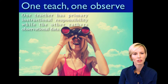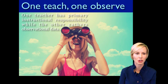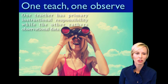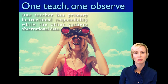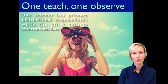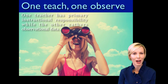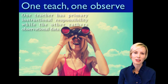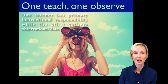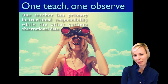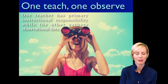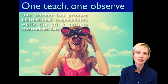In the second model of co-teaching — one-teach, one-observe — one teacher takes the primary responsibility for instruction while the second teacher is observing. The second teacher could be observing a variety of things: observing students and taking data on their performance, observing a particular student perhaps for behavior data, or observing the teacher — which could be evaluative or to learn a new skill.